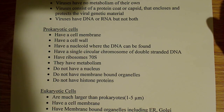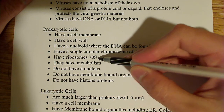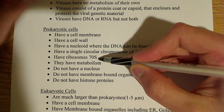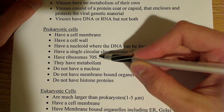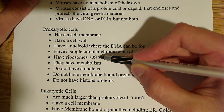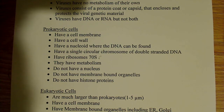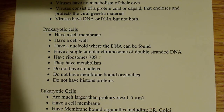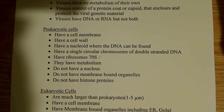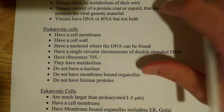Prokaryotes have a 70S ribosome — these are Svedberg units — and the 70S refers to the complete ribosome, both subunits together. We're going to talk more about why the 70S ribosome is important. They also have metabolism. The things they do not have: they don't have a nucleus, they don't have membrane-bound organelles, and they don't have histone proteins — all of which are found in eukaryotic cells.